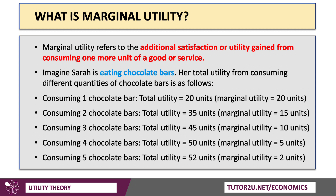A key idea is marginal utility, which is the extra satisfaction — the additional utility — from consuming one more unit of a good or service. Take a consumer, Sarah: she's eating chocolate bars, and we see here her total utility goes up as she consumes more bars in a given time period. But the first bar gives her 20 units of marginal utility, the second 15, the third 10, the fourth 5, and the fifth only 2 units.